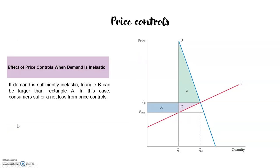Now imagine that the demand is sufficiently inelastic, as in this slide. Triangle B, which is part of what the consumers are losing, is greater than rectangle A. So in this case, when demand is very inelastic and there is a price control setting the price no more than p_max, this will not benefit the consumers — it will actually mean a decrease in their surplus and they will have a net loss after this price control.